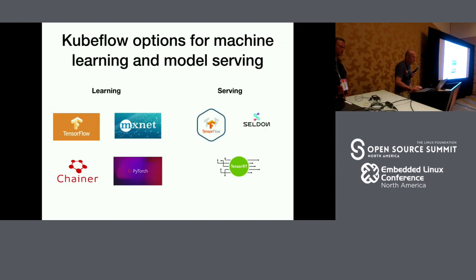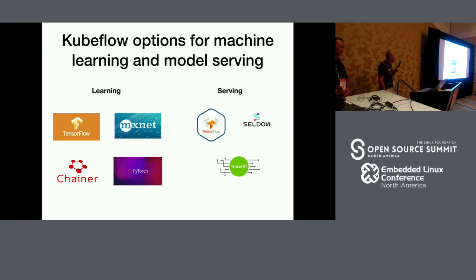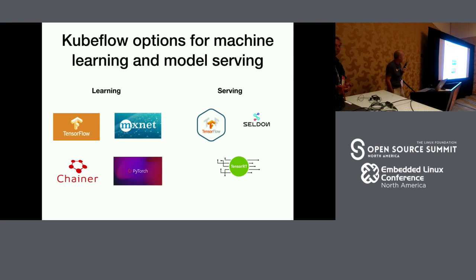Now that we've solved the storage problem, the next question is how do we start? Kubeflow provides multiple options for both machine learning and model serving. TensorFlow was the original one, but it's quickly expanding to MXNet, PyTorch, Chainer, and others. For model serving there is TensorFlow Serving, Seldon, TensorRT, and many others coming up. For what I'm showing here, I'll be using TensorFlow — old but reliable.